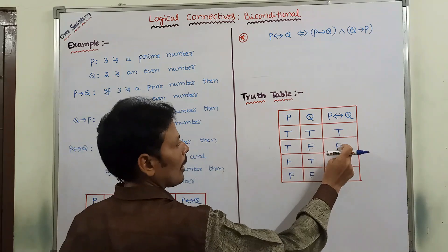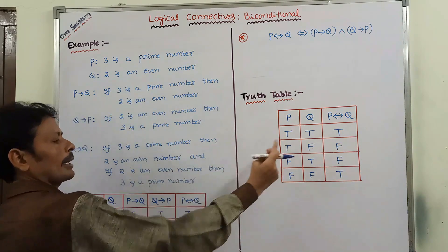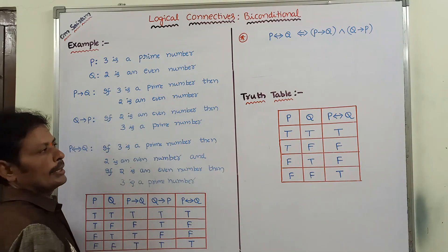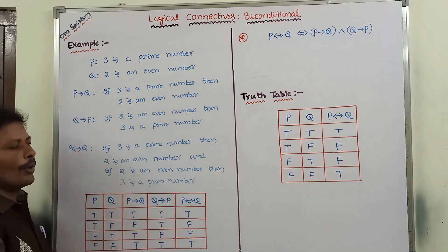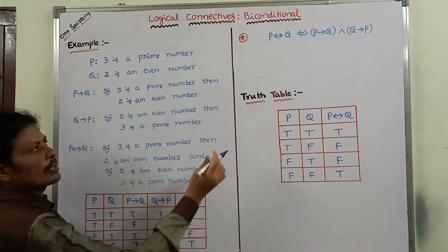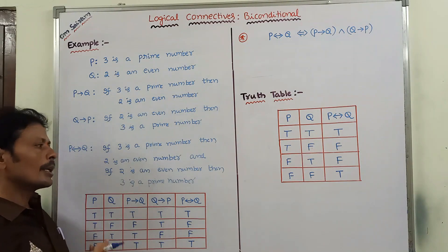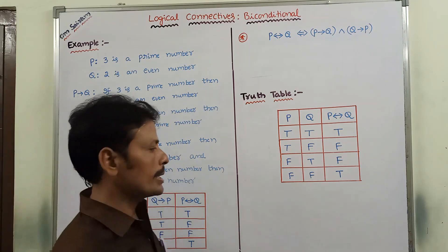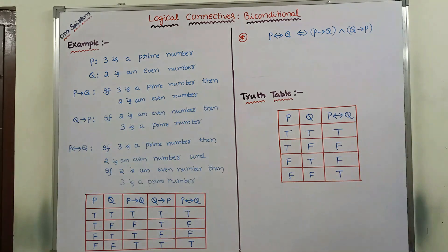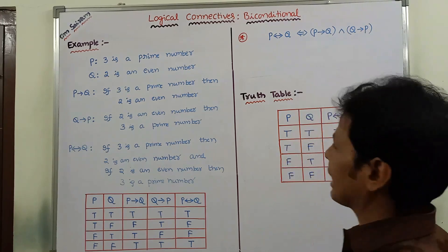Both approaches give equivalent results: true, false, false, true. The last column — P biconditional Q — is derived from the formula P conditional Q AND Q conditional P. This is the complete description of the biconditional connective.